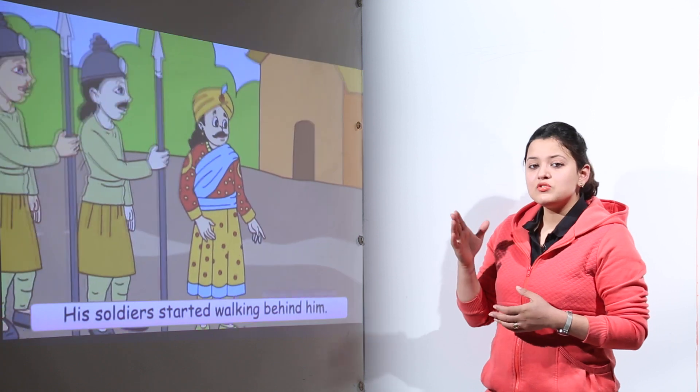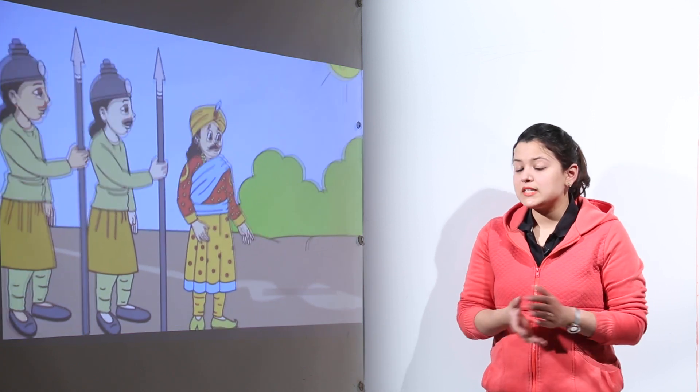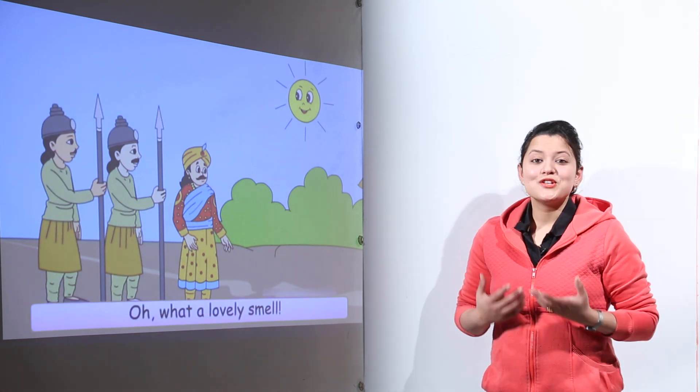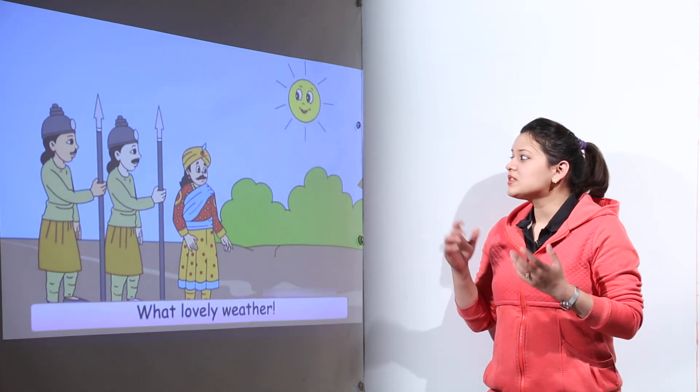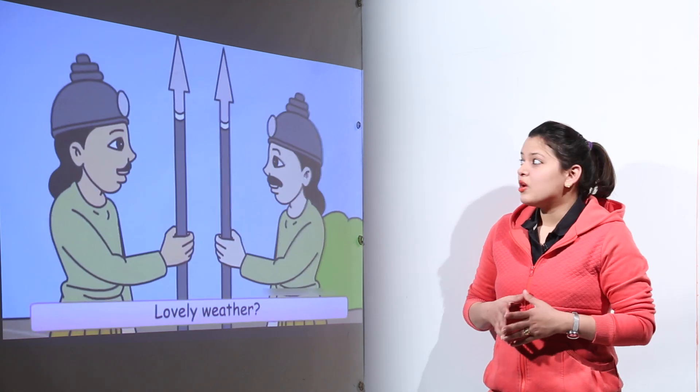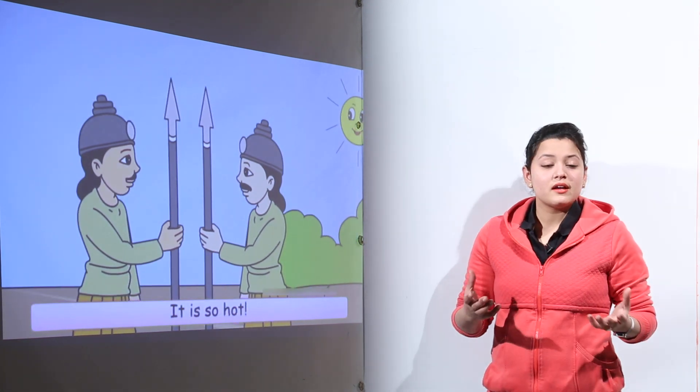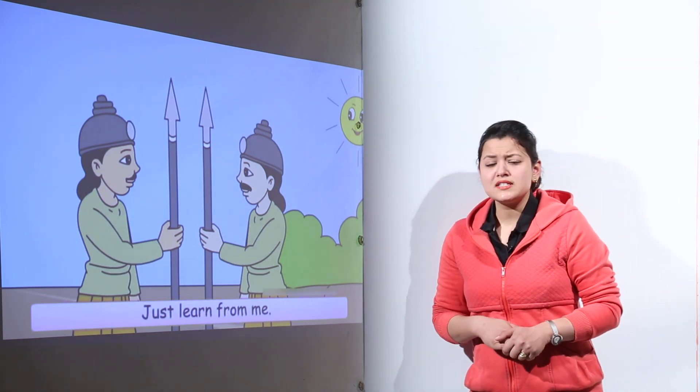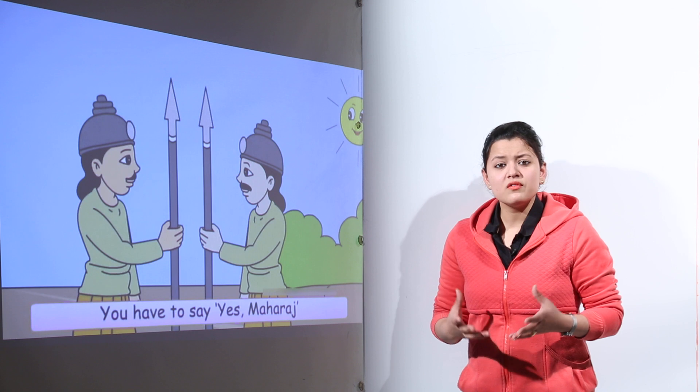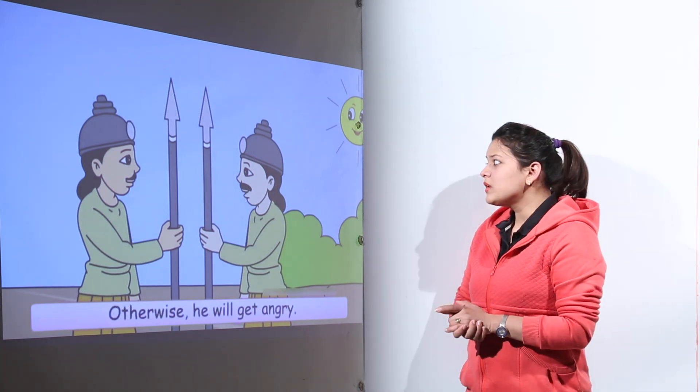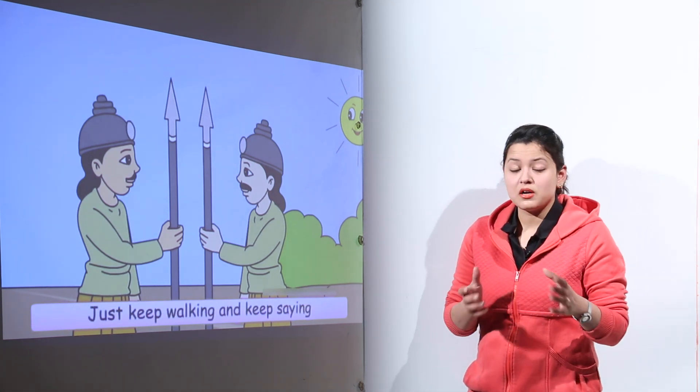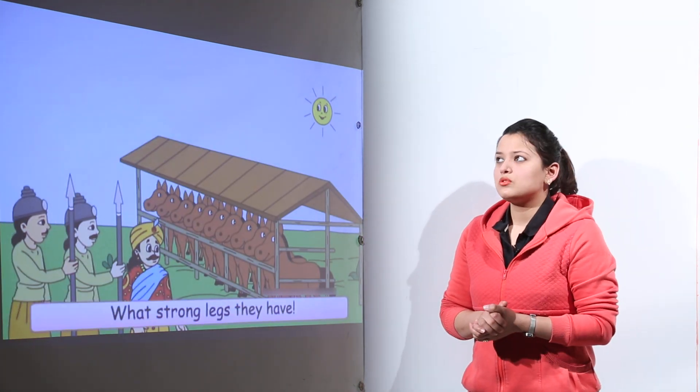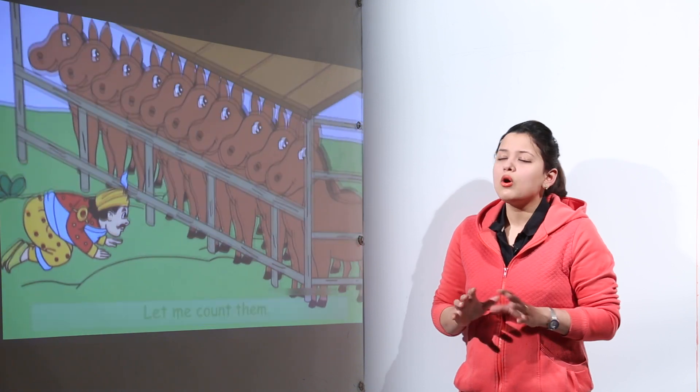So one day what happened that he just went out to roam around in his kingdom and he found a very nice smell coming up. So he remarked what a lovely smell to which his soldiers said yes Maharaj. Then he said what a lovely day to which his soldiers said yes Maharaj. But the other soldier just objected and said it's such a hot day. Why are we saying yes Maharaj? To which the other soldier explained that the Maharaja gets angry if we do not say yes Maharaj to whatever he says. So the other soldier just agreed okay fine.